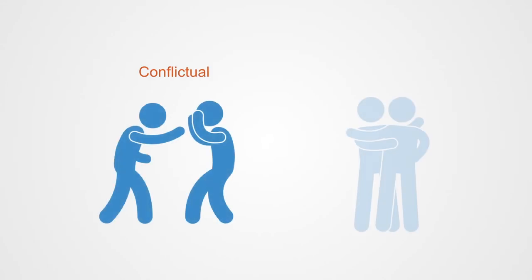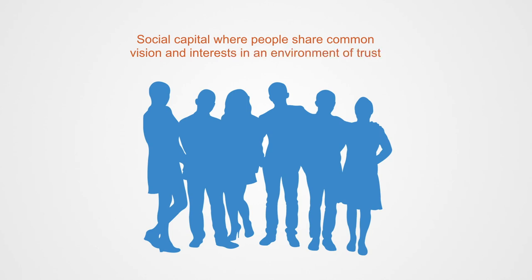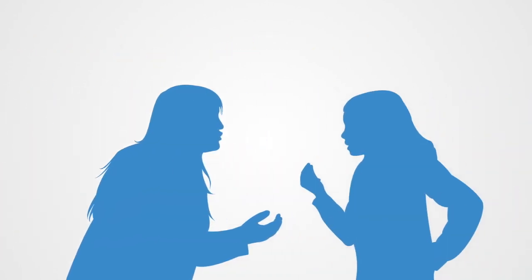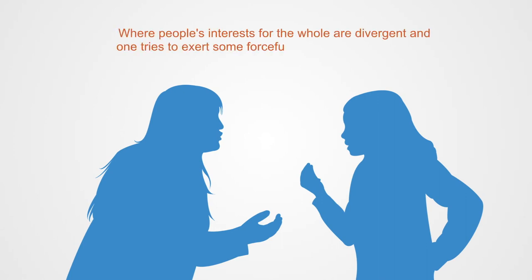These relations can be cooperative or conflictual. In the case of cooperative relations, we're dealing with the exchange of social capital where people share common vision and interests in an environment of trust. In the case of conflict, the relations can be of power where people's interests for the whole are divergent and actors try to exert some forceful influence over others for them to conform to their desired interests.